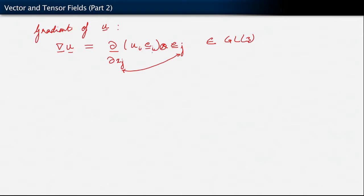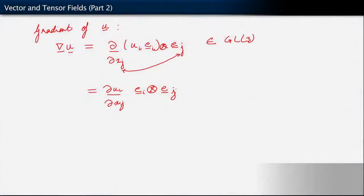Because we know that e itself is independent of position, when we carry out this derivative there are no derivatives to be taken of the basis vectors. So we can write this very simply as partial of ui with respect to xj, multiplied by the tensor product ei tensor ej, with the sum over i and j implied. It is very clear now that this is indeed a tensor. We have right here our representation of grad u in terms of its components. The components of grad u are simply partial of ui with respect to xj, multiplied by ei tensor ej, with the sum over i and j. We have the representation in terms of coordinate notation.